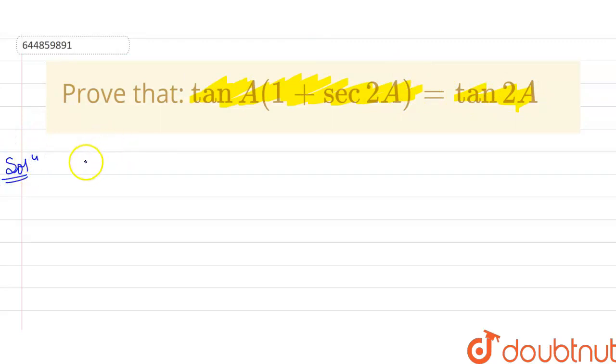This is my solution here. So if I write down my LHS part here, my LHS part here is basically tan A times (1 plus sec 2A). I know that tan A can be written as sin A by cos A.